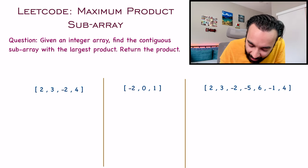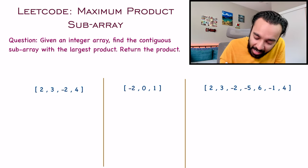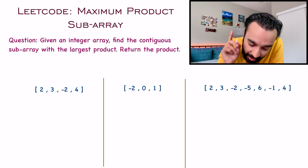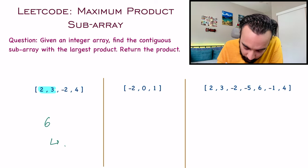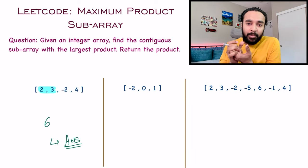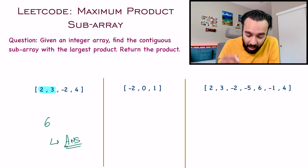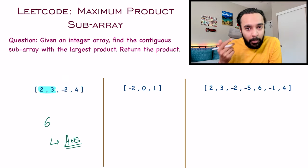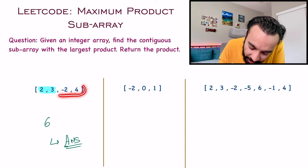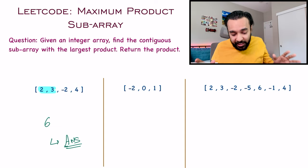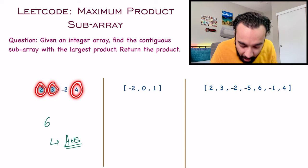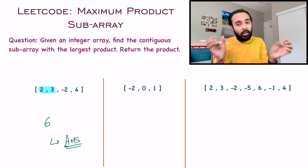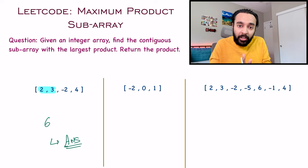So let us try to understand even better with some sample test cases. For test case number one, I have an array that has four elements and it also has a negative integer. In this particular array, you can find the maximum product when you multiply 2 and 3, and that will be 6. Notice that you cannot select any other subarray such that the product is greater than 6. For example, if you select 3 and 2 that will be minus 6, or minus 2 and 4 that will be minus 8. Also, you cannot have an array like 2, 3, and 4 because these elements are not contiguous.